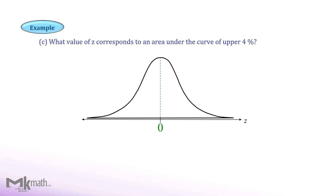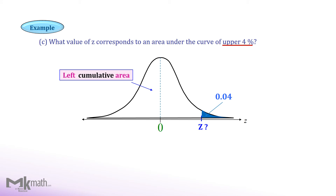Let's take a look at the last example. First, find the given area in the question. It says upper 4%. So we have the right-tailed area of 4% or 0.04. We need to find the z-score that corresponds to the area of 0.04. However, our table gives the left cumulative area. So we need to convert the right area to the left cumulative area to look up the table. Since the whole area is 1, 1 minus 0.04 gives the left cumulative area of 0.96. Now let's look up the table using 0.96.